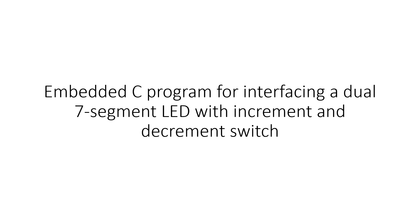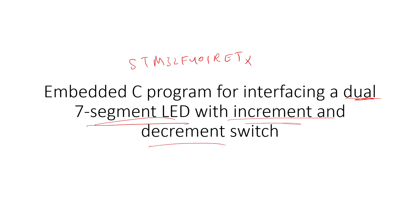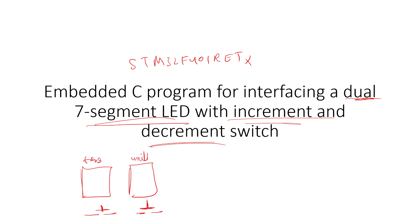Hello everyone, welcome to my channel. In the previous video we discussed how to interface a single seven-segment LED with an increment switch with the STM32 target module, which is STM32F401. In this video we will be discussing how to interface a dual seven-segment display with an increment as well as a decrement switch — two seven-segment displays and two switches. One display represents the tens place and the other the units place.